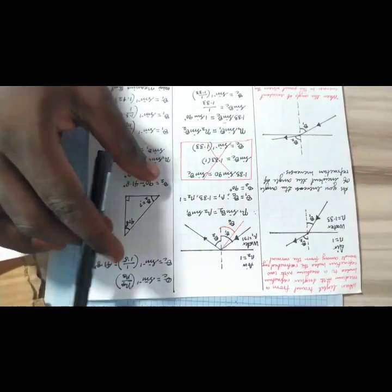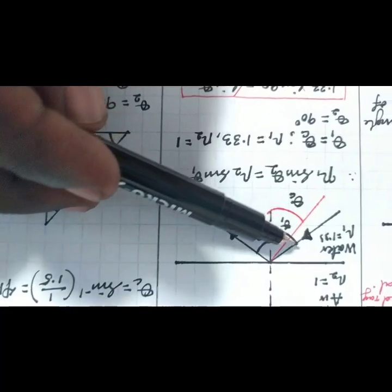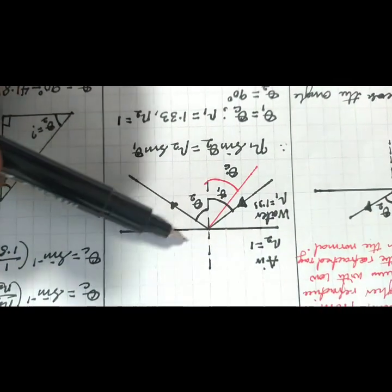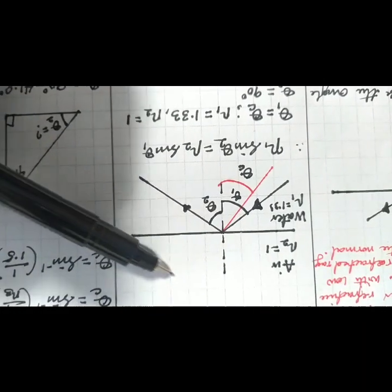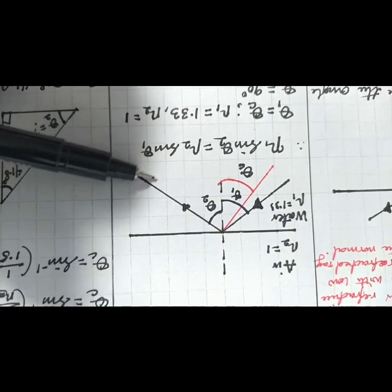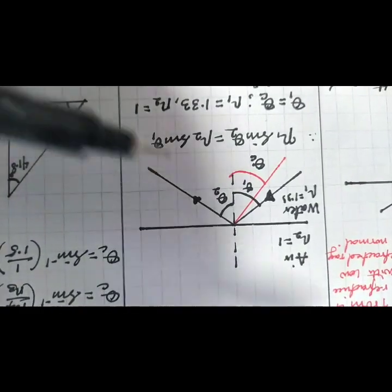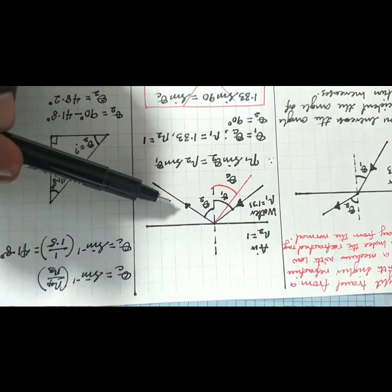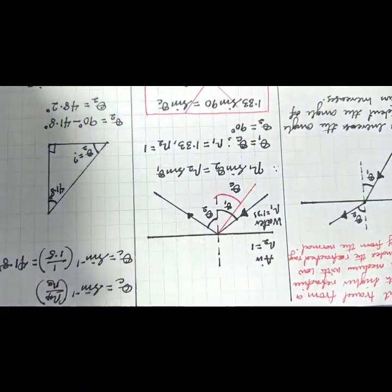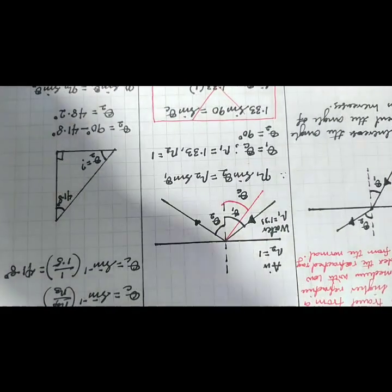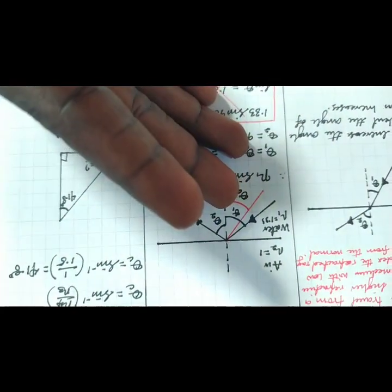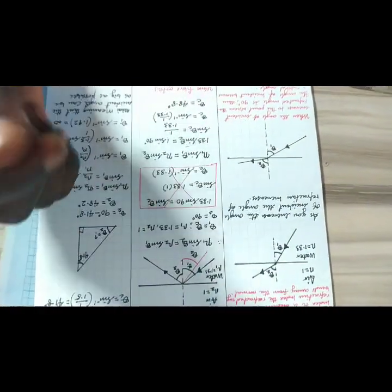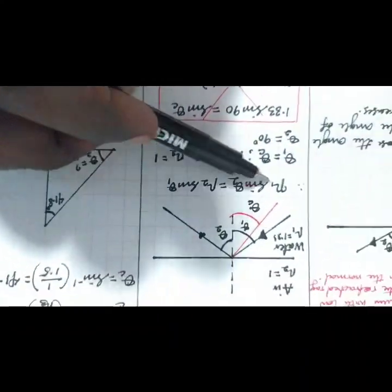If I then increase the angle of incidence beyond the critical angle, the refracted ray will leave the surface of the glass and reflect completely inside the glass — that is what we call total internal reflection. The examiner can ask: what are the conditions for total internal reflection? The first condition is that light must travel from a denser medium to a less dense medium. The second condition is that the angle of incidence must be greater than the critical angle.